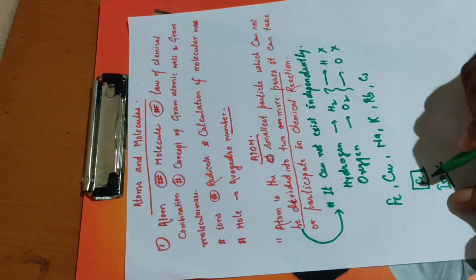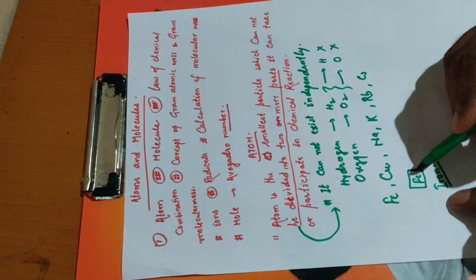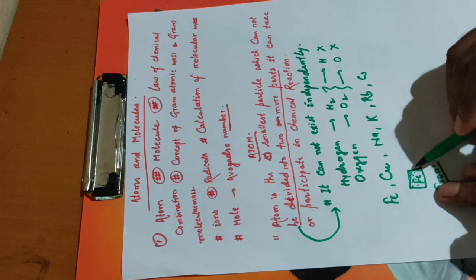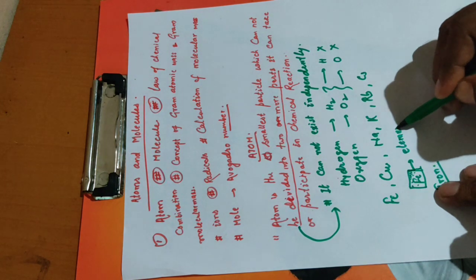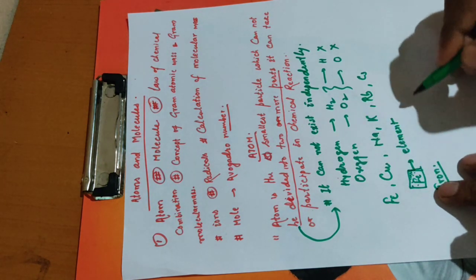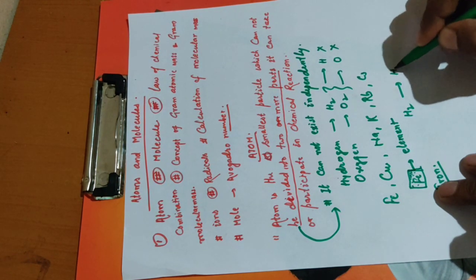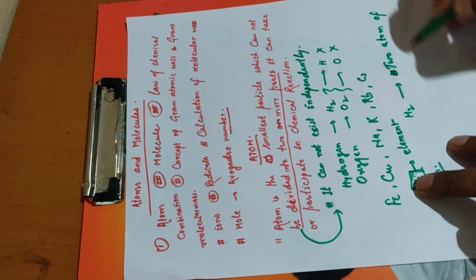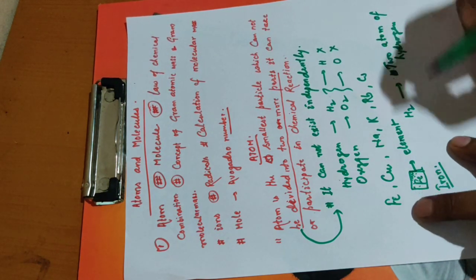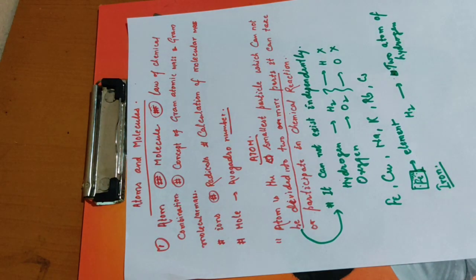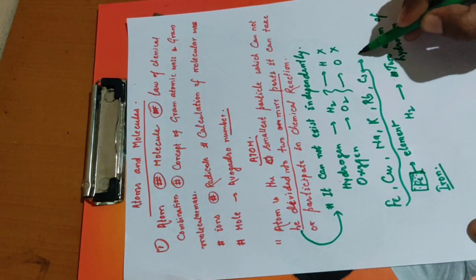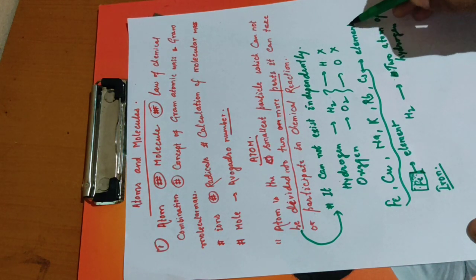If we write Fe, it does not mean a single atom of iron - there are so many atoms in it. All these symbols indicate elements - yeh element ko denote karte hain. So remember: when we talk about what an atom is, atom is the smallest particle which cannot be divided into two or more parts.